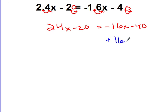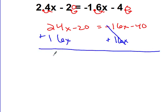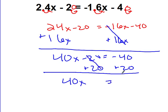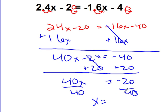Add 16x to both sides: 40x minus 20 equals negative 40. Add 20 to both sides: 40x equals negative 20. Divide by 40: x equals negative 20 over 40, which simplifies to negative 1 half. Because we started with decimals, we write the answer as x equals negative 0.5.